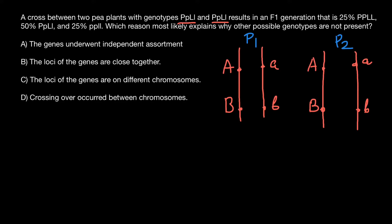Different combinations are possible. For example, we may have one chromosome which has dominant allele A and recessive allele B on one side, and recessive allele A and dominant allele B on the other side. So one parent can be of such a genotype, while another can have dominant alleles on one chromosome and recessive alleles on the other. Many different variants are possible on the chromosomal level even when two parents have the same genotype.